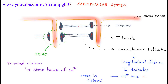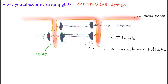The advantage of t-tubules is that the electrical activity transferred by the sarcolemma can easily reach the inside of the muscle via the t-tubule. As a result, calcium ions are released from the terminal cistern, and these calcium ions bind with troponin C, which makes conformational changes in troponin I and troponin T.